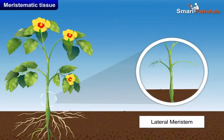Intercalary meristem is present on either side of the node. The activity of these meristems results in the elongation of that part of the plant where they are present.